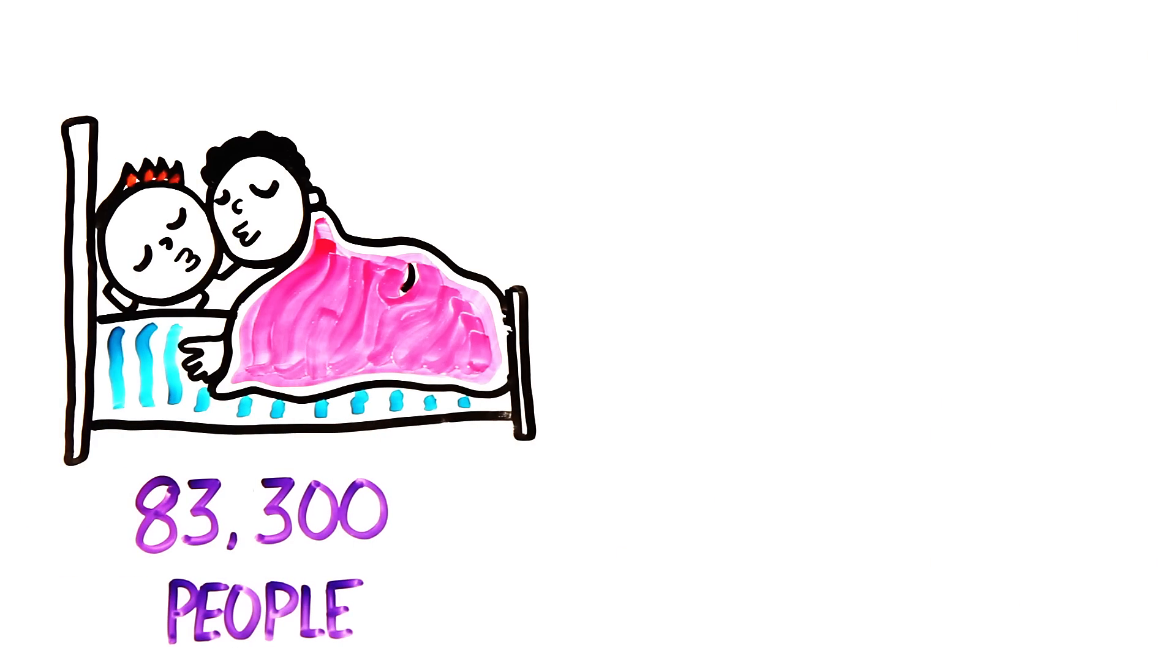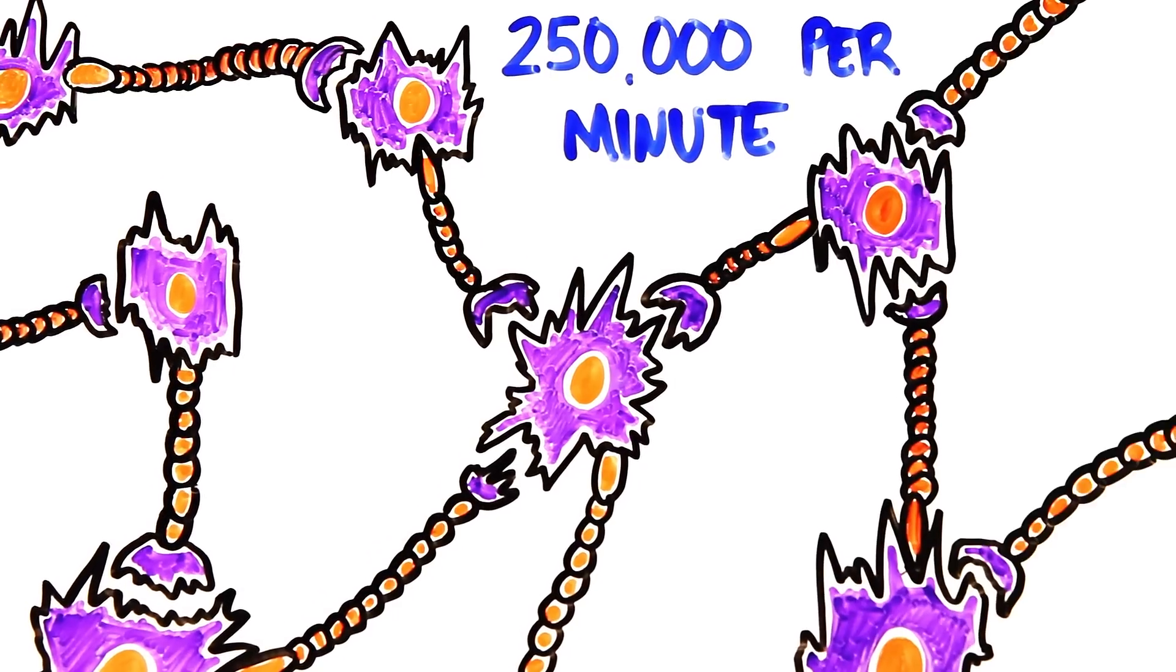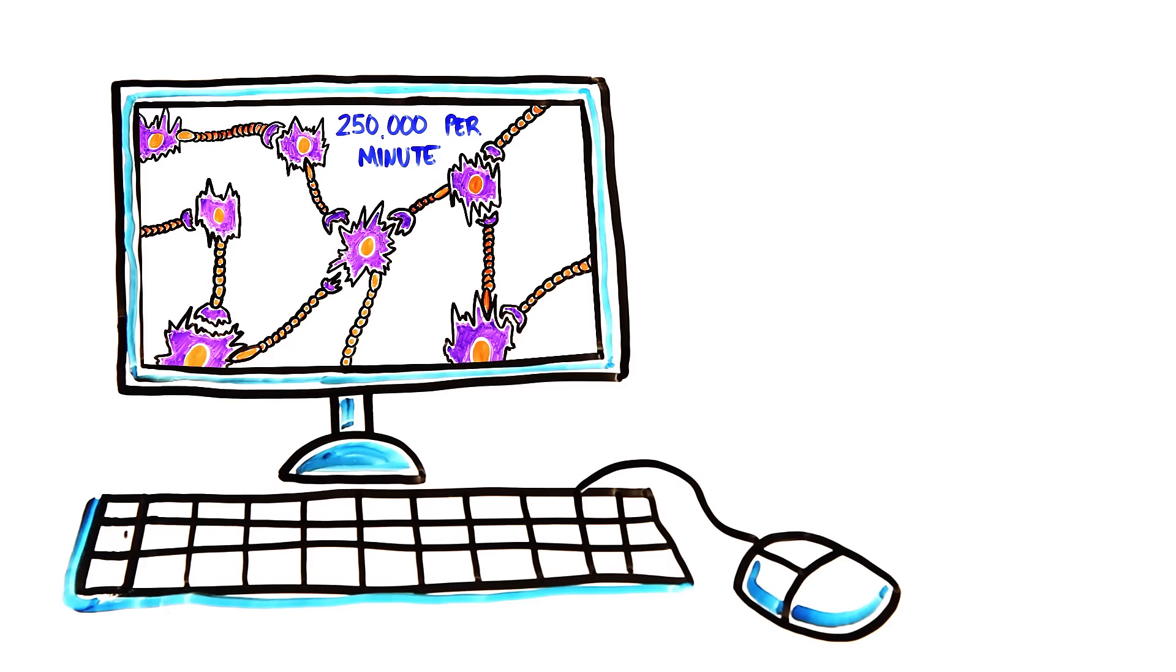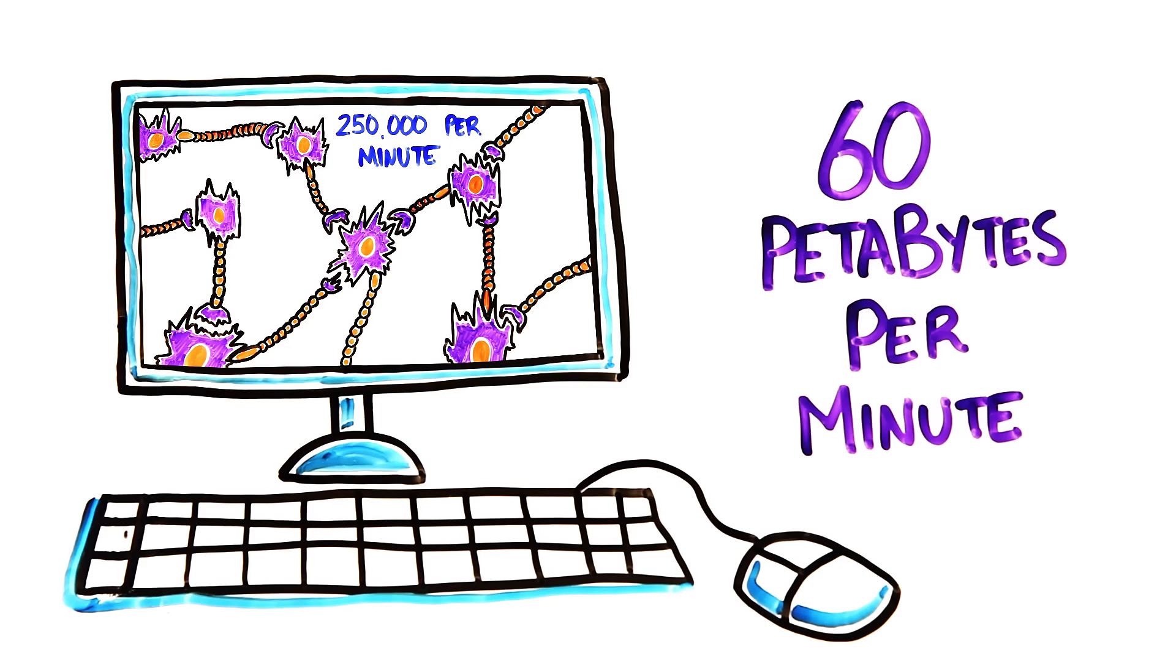83,300 people have sex, but only 258 babies will be born. And a fetus is developing neurons at a rate of 250,000 per minute, so it's no wonder that a computer simulation takes 60 quadrillion bytes to simulate a minute.